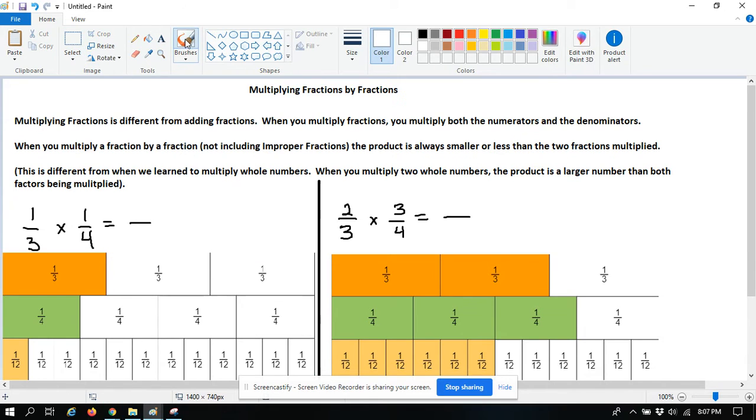So let's look at an example here. The first one says one third times one fourth. So we know one times one is one, and we know three times four is 12.